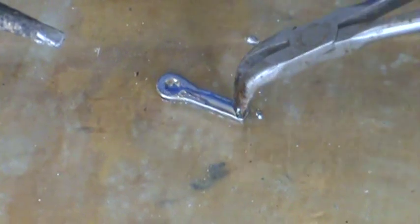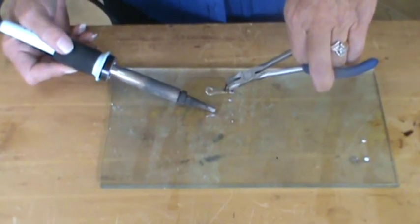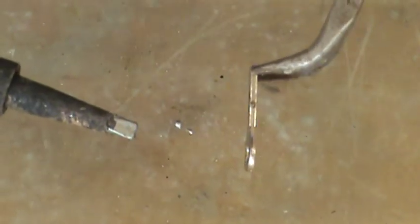If when you're tinning the hanger it gets in the hole, that's alright. Just put your iron on the back side and let it fall through so that the hole is open again. Once it's done, it is very warm, you want to set it aside to cool.